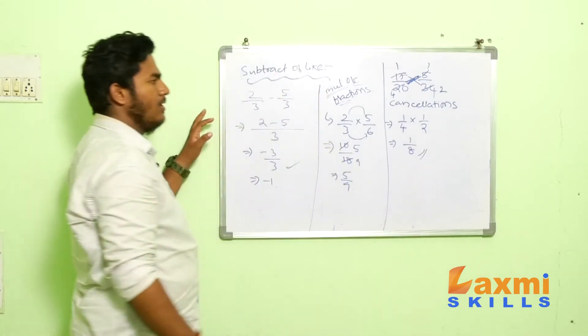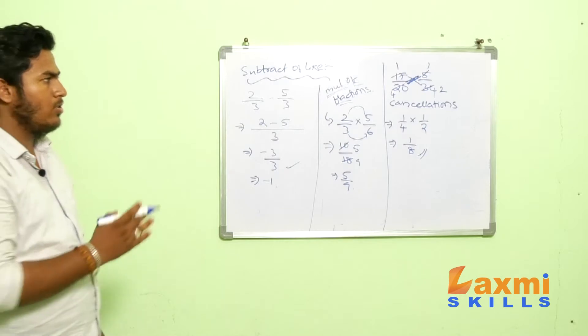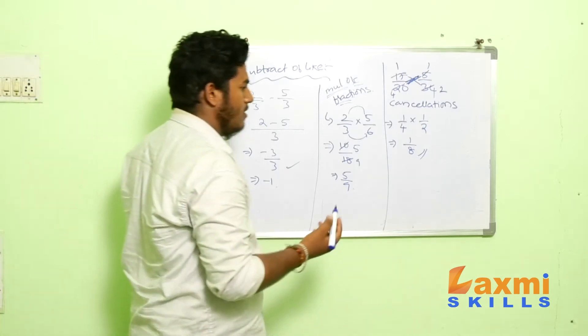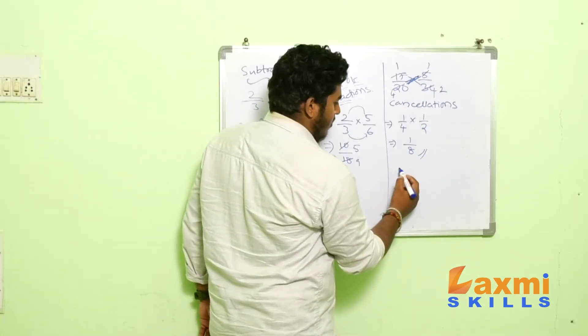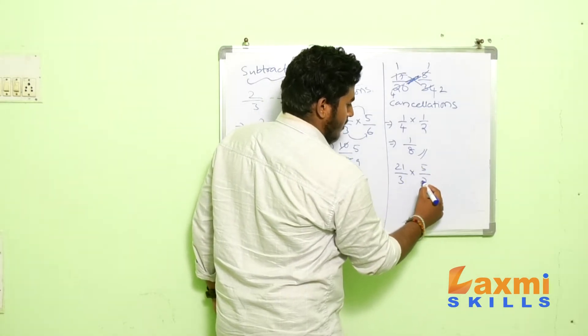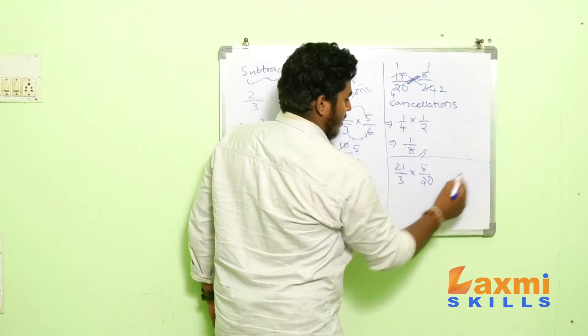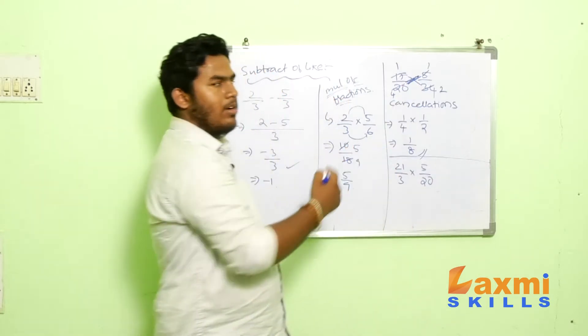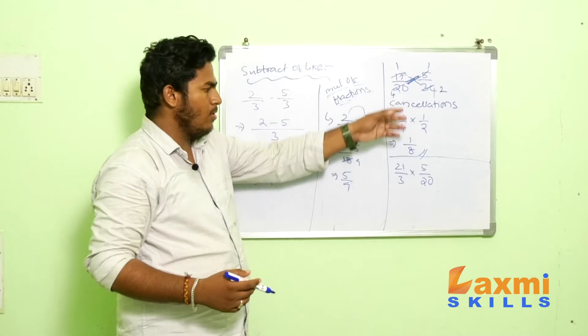So, it is your answer. So, in this way you are going to solve the multiplication of these fractions. So, let me give you another example. That is 21 by 3 into 5 by 20. So, in this case, if you consider it is not similar to the problem which we discussed before. But, here you can see this 3 and 27 will be going in one table. And 5 and 20 will be going in same table.